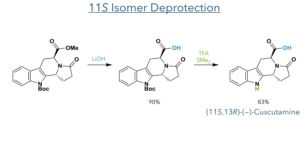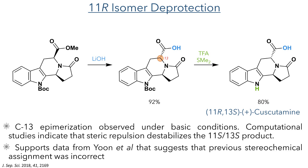With this ring now formed, the compounds can be deprotected using lithium hydroxide and TFA dimethyl sulfide. This produced the 11-S-13-R isomer in an 83% yield. However, when this sequence was carried out on the 11-R isomer, epimerization of carbon-13 was observed. Computational studies suggest that there is steric hindrance that destabilizes the 11-S-13-S product, making it more favorable to epimerize under basic conditions.